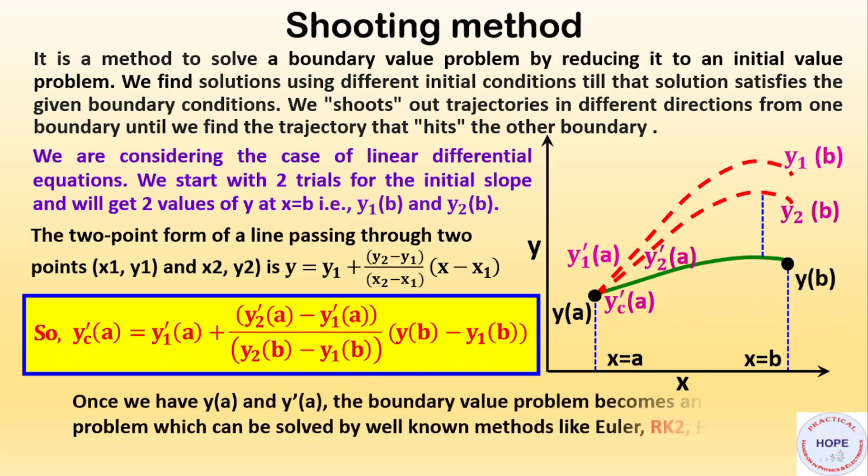Once we have y(a) and y'(a), the boundary value problem becomes an initial value problem which can be solved by well-known methods like Euler, RK2, or RK4. Here we are going to consider RK2, that is the Runge-Kutta method of second order, because it has reasonable accuracy.